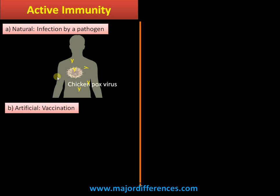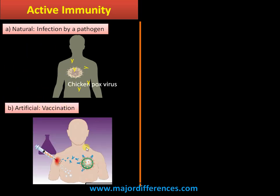Artificial active immunity — the classical example is vaccination. We are injecting a weakened pathogen into the body prior to exposure to the live pathogen. When the live pathogen enters the system, the body can recognize it very easily and eliminate it with a fast immune response.